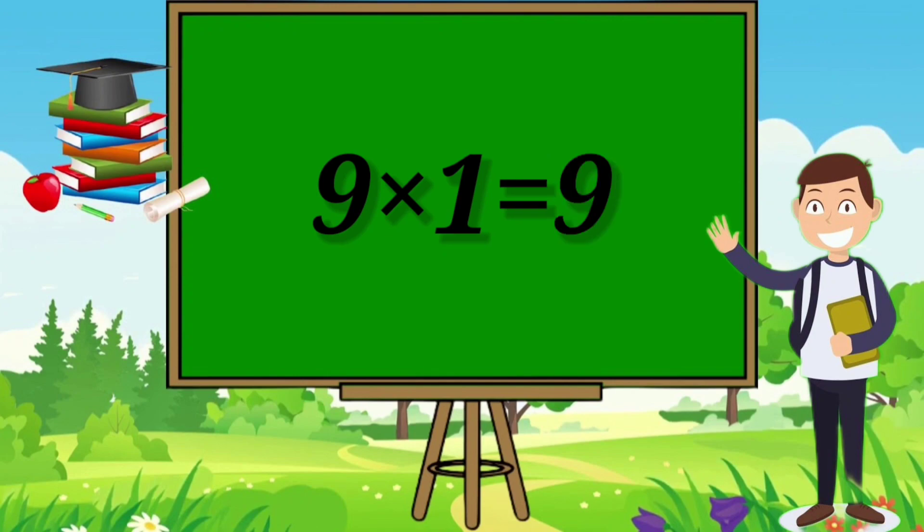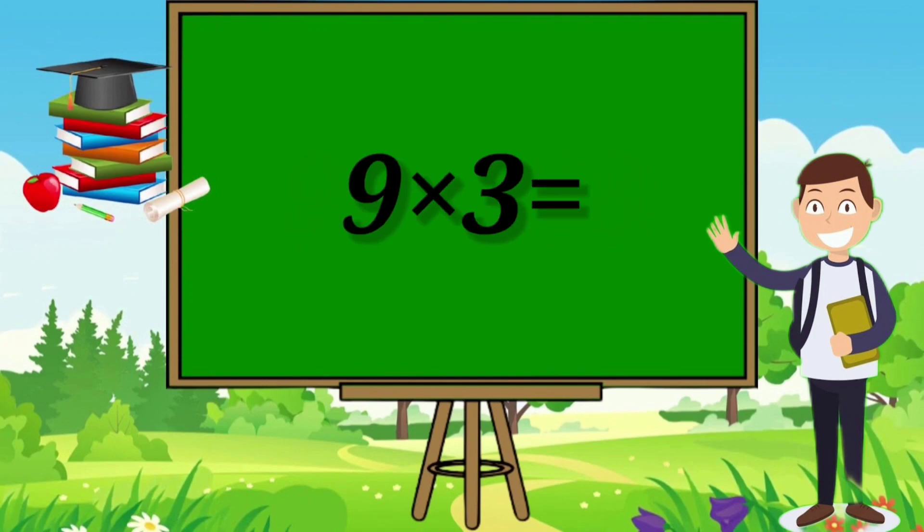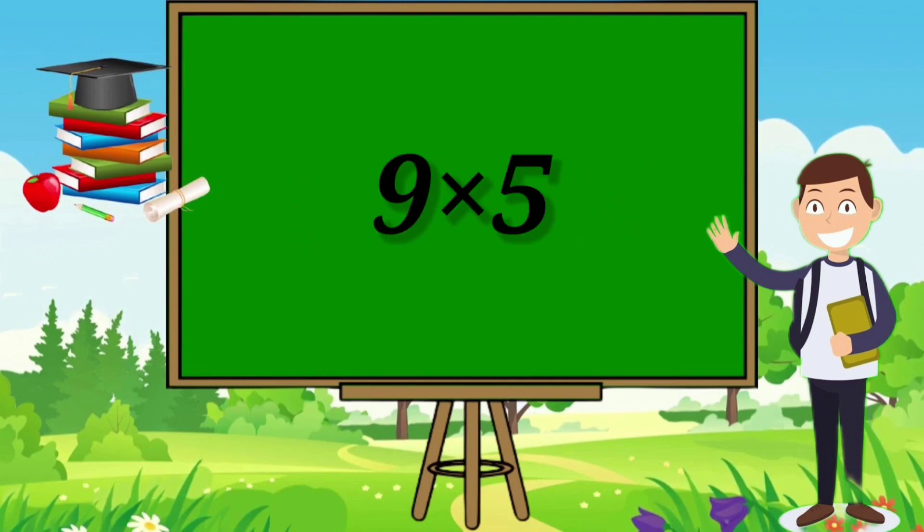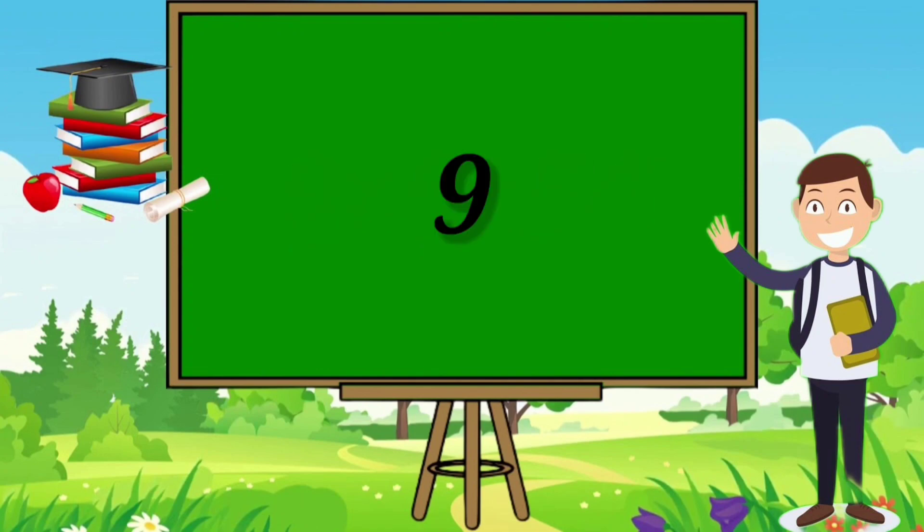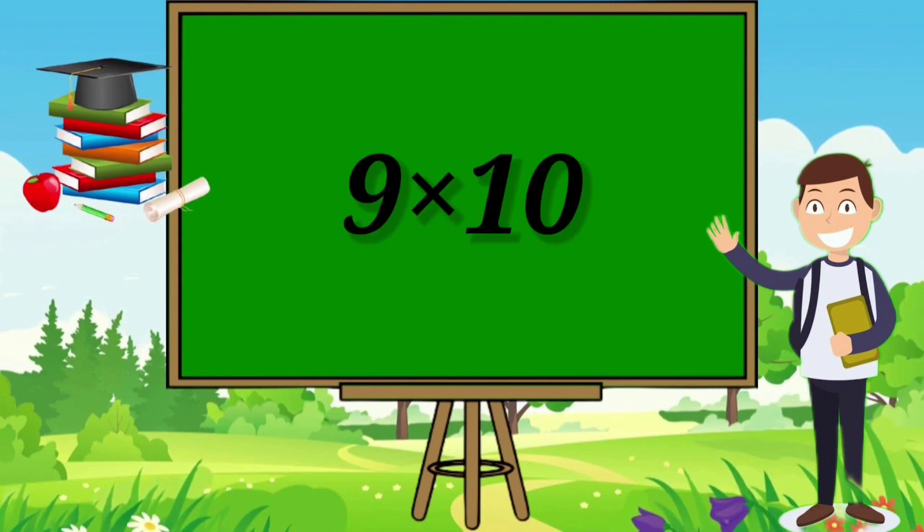9×1=9, 9×2=18, 9×3=27, 9×4=36, 9×5=45, 9×6=54, 9×7=63, 9×8=72, 9×9=81, 9×10=90